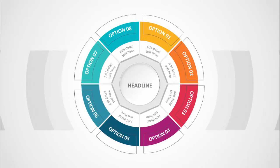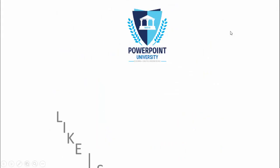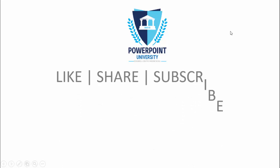In today's tutorial I'm going to show you how to create an eight options infographic slide in PowerPoint. When I click you can see I have made this colorful old shape design — an eight options slide in PowerPoint. You can put the option one here and then add some detailed text, and in the center you can add the headline.